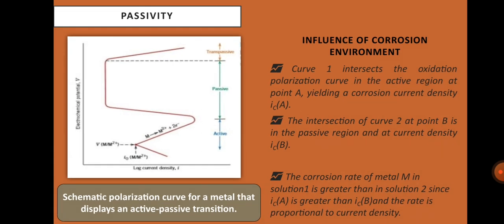In the figure, this is the schematic polarization curve for a metal that displays an active-to-passive transition. Finally, at even higher potential values, the current density again increases with potential in the transpassive region.